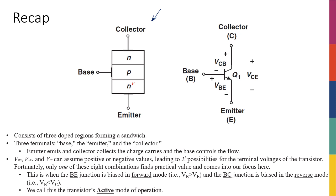Because the emitter is much more heavily doped than the base and collector, we call this N-type material an N-plus type material to show it has a higher level of doping. We then discussed the flow of charge carriers in this NPN structure, which is made of two different PN junctions — one between the base and emitter, and one between base and collector — and saw how the current is controlled by the voltage across different terminals.